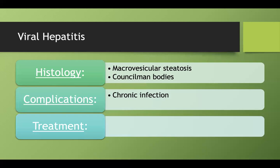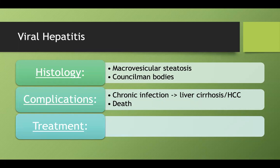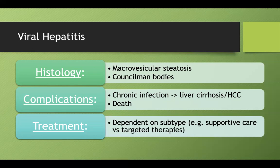Complications of viral hepatitis: some types, especially hepatitis B and C, can cause chronic infection, which leads to liver cirrhosis and then hepatocellular carcinoma. Even in acute hepatitis, severe cases can lead to liver failure and death. Treatment depends on which hepatitis we're dealing with, so as we go through hep A, B, C, D, and E, we'll discuss how treatment may vary.